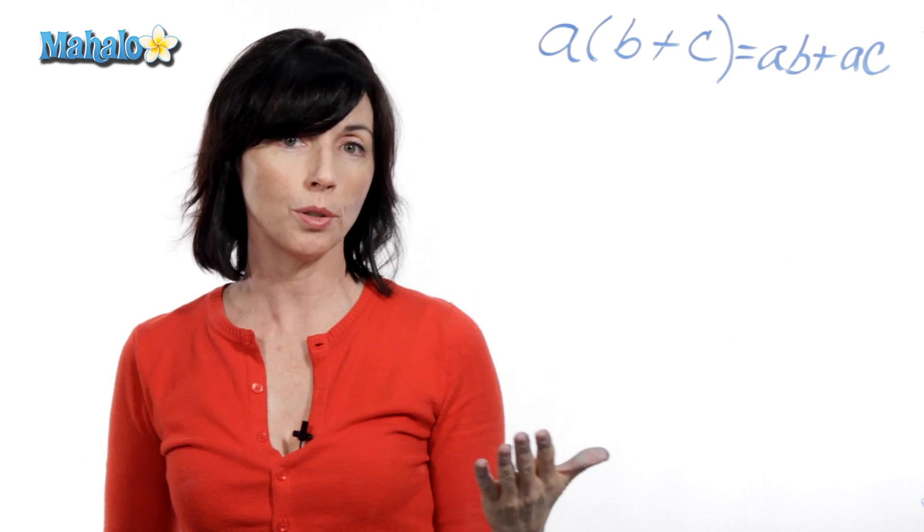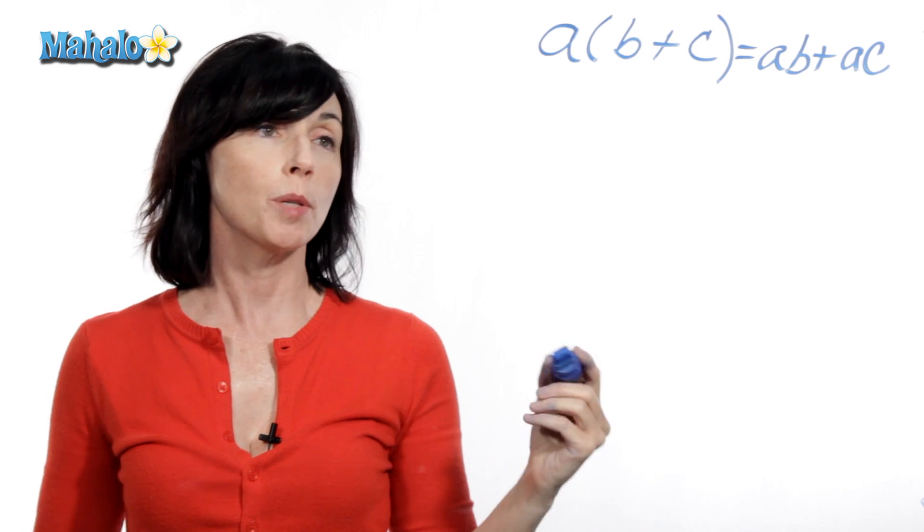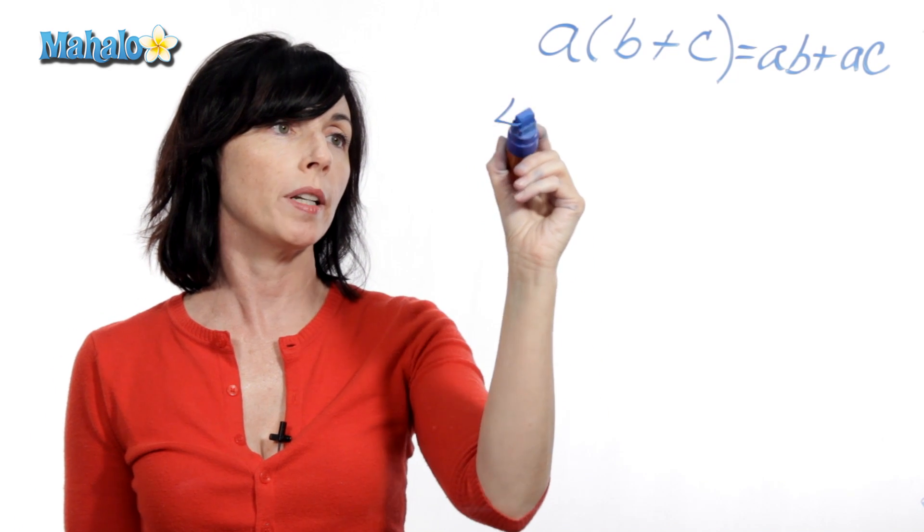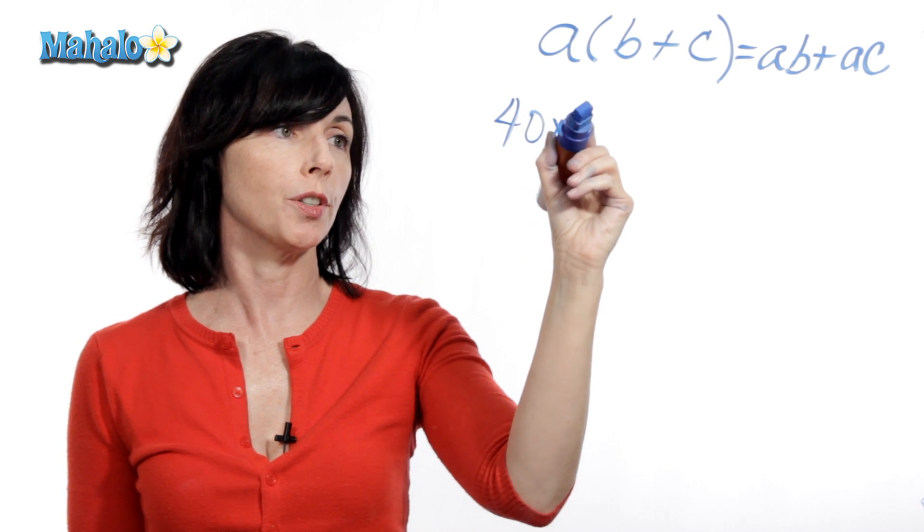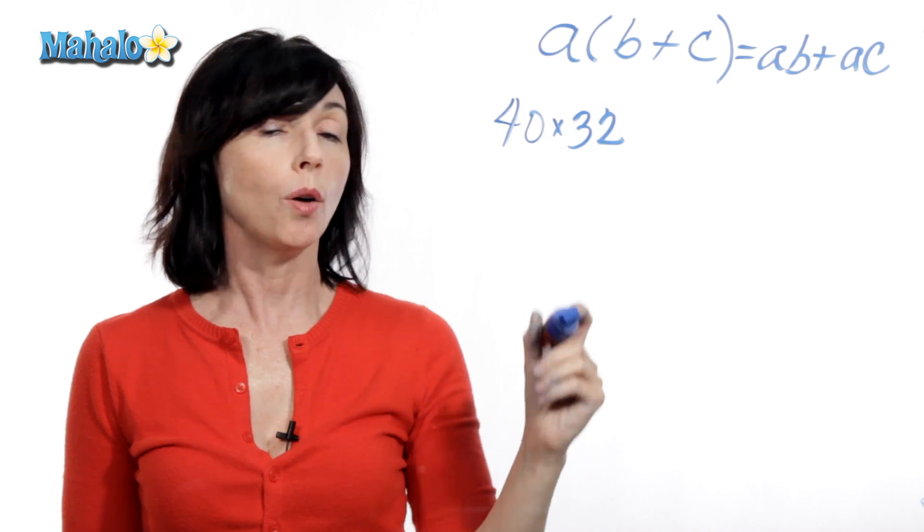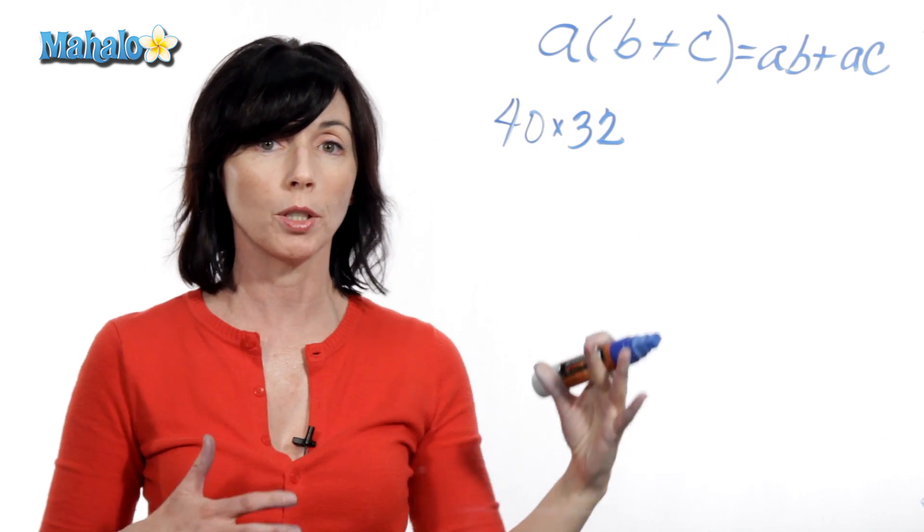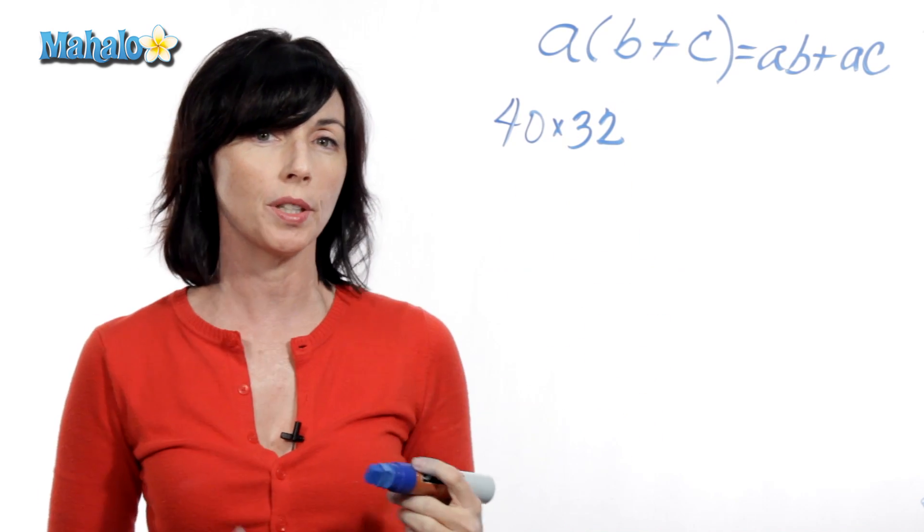So let's use it, and I think you'll see how useful this can be. Suppose we have 40 times 32. Well, we can line these up and multiply them the normal way, but let's do it with the distributive property.